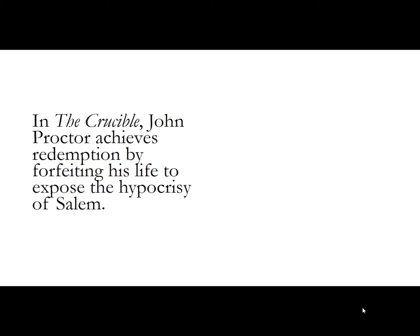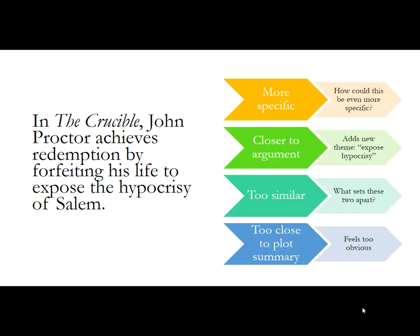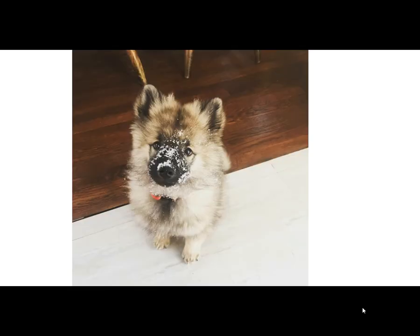Here's another one: 'In The Crucible, John Proctor achieves redemption by forfeiting his life to expose the hypocrisy of Salem.' We get some better things here. Now we're talking about a clear argument — that he's achieving redemption — and a second point developing in our thesis about the hypocrisy of Salem. How could this be even more specific? There's some room to change this thesis. It's closer to argument now; we're talking about exposing hypocrisy and moving the plot along in a thoughtful and worthwhile way. And that picture — you can't beat it, it's just the most adorable thing you've ever seen.